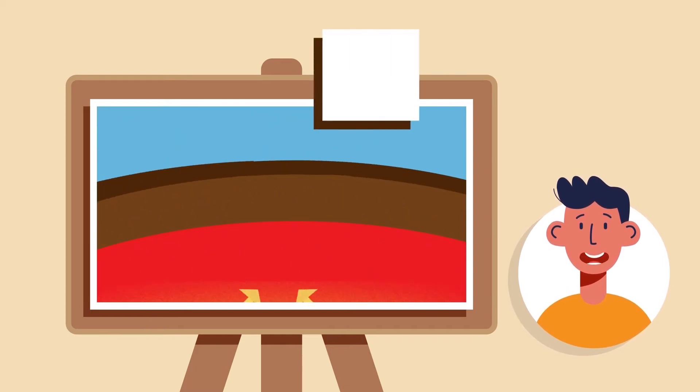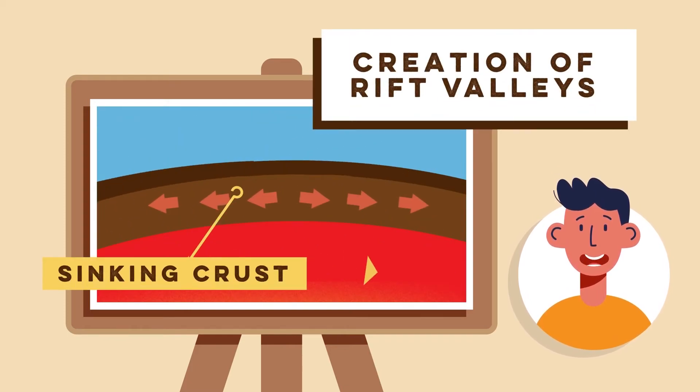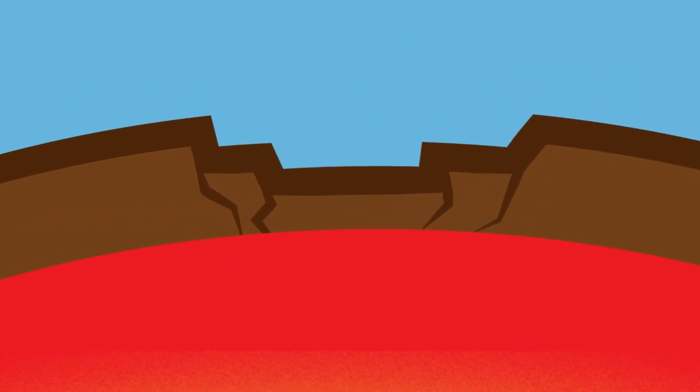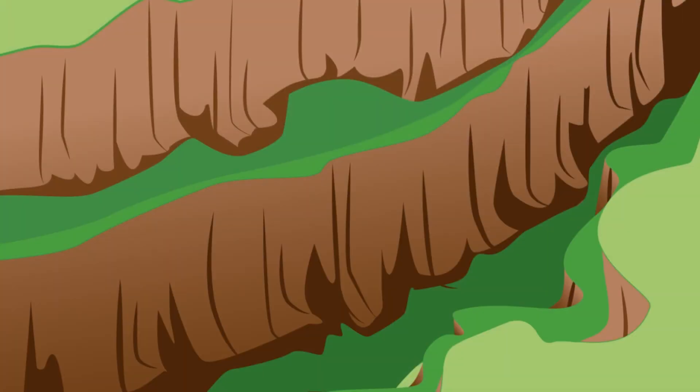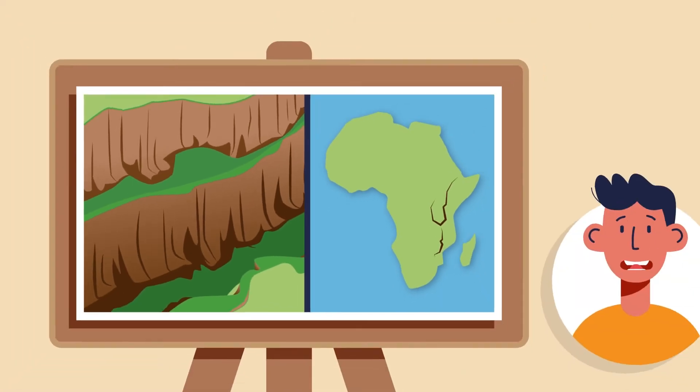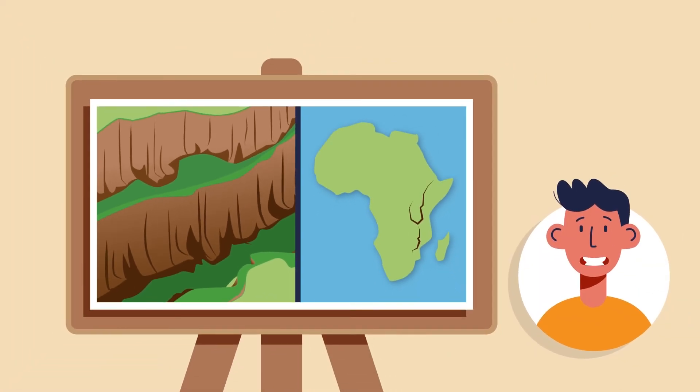Step 3 is creation of rift valleys. On land, when tectonic plates diverge, they create rift valleys. These are large depressions formed by the sinking of the Earth's crust. The East African rift is a significant example where continental plates are being pulled apart.